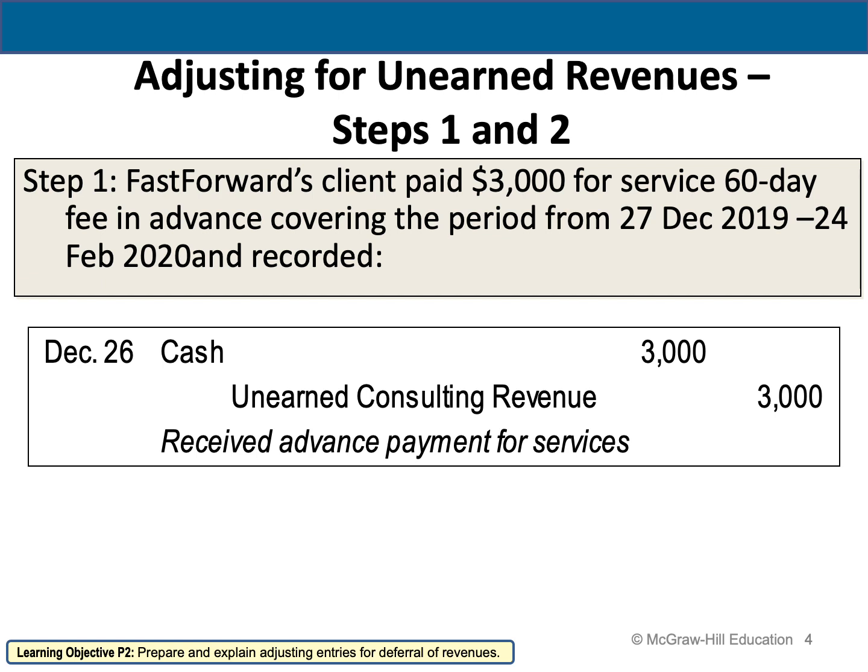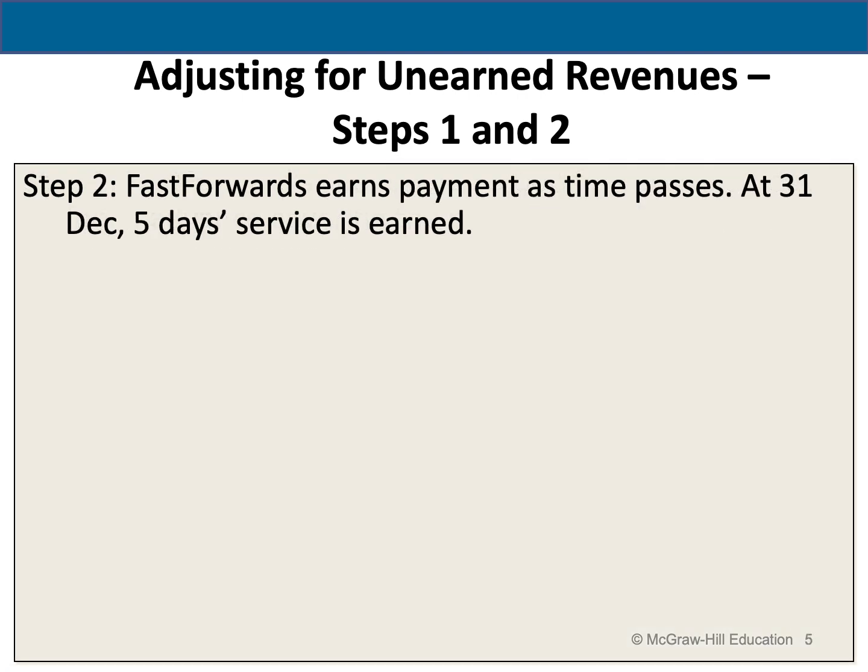Cash is increasing on the debit side because I received the cash in advance. That's why in my journal entry, I record it on the first line. And unearned revenue is on the credit side because my liability is increasing. We recorded the entry as cash to unearned revenue because we received the cash from the customer and we did not perform the service yet.